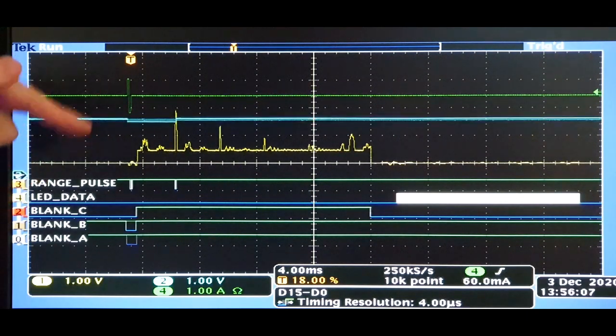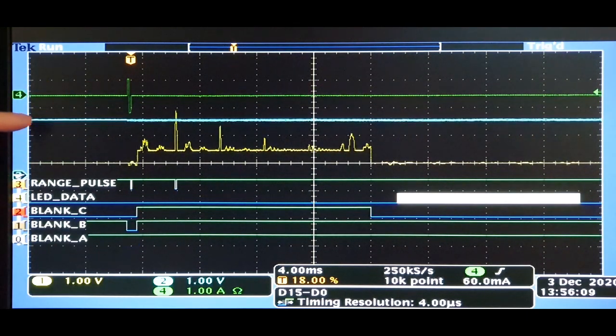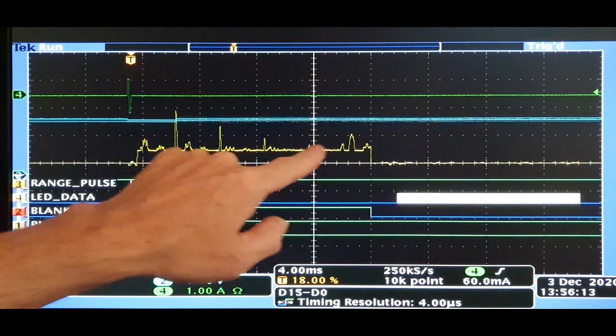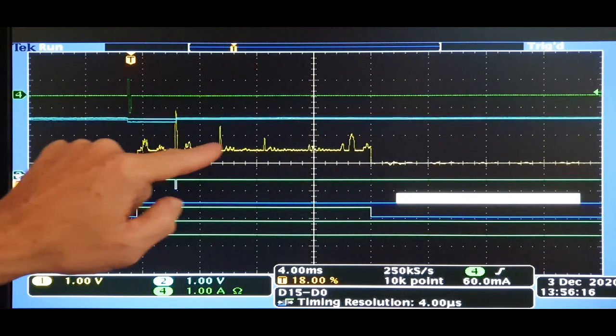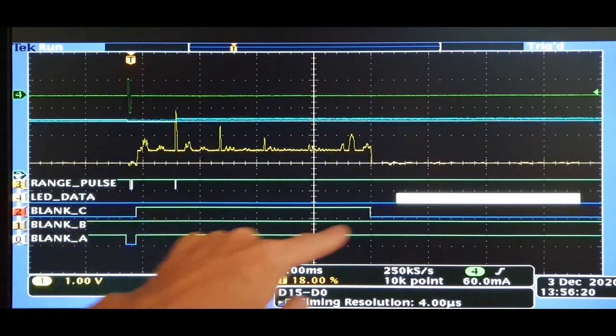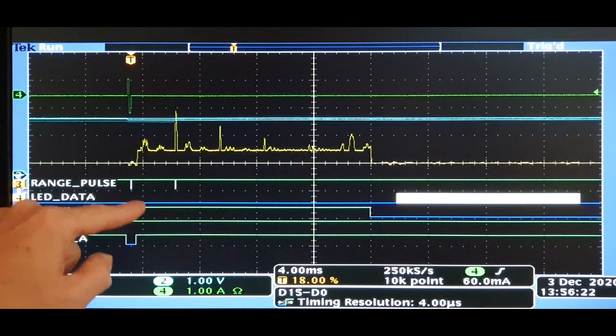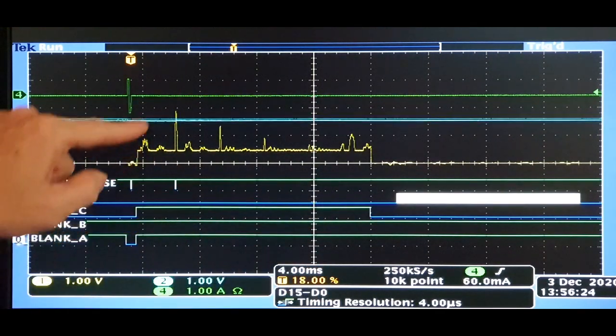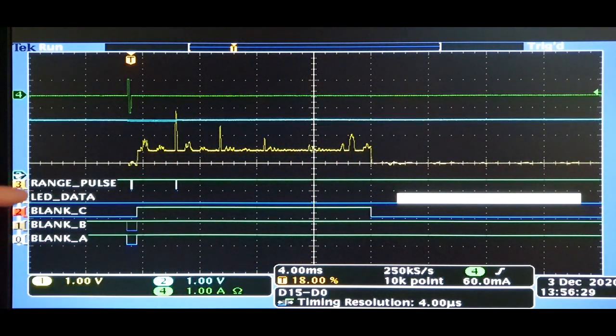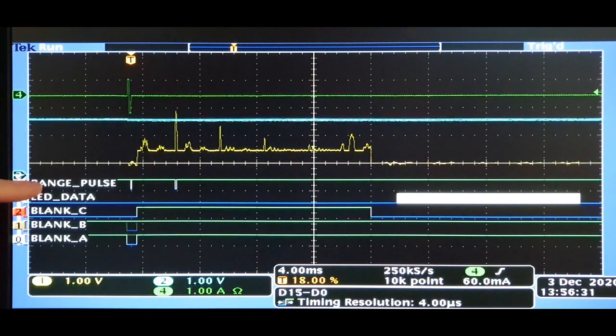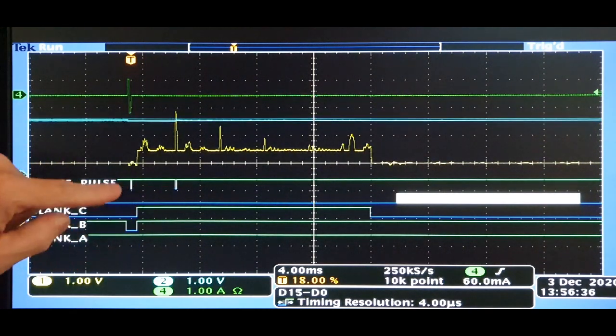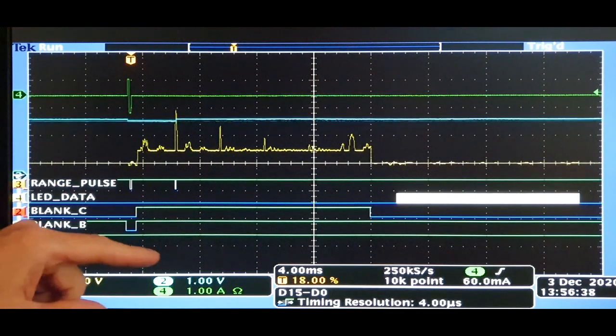This blue trace which is kind of dancing around is the sample peak amplitude of the returned echo. The return echo here is this yellow signal which you can see is gated by blank C. So it's only when blank C is high does the analog signal come through and get processed. Down below that we have the range pulse which gates the microcontroller's timing measurement.